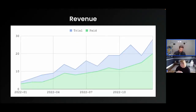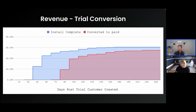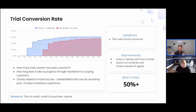Revenue is an interesting category because it tends to be trailing metrics, but they have a more direct correlation to the actual performance of your business. Trial conversion rate: being able to install easily and quickly isn't the only thing that converts trials, but if your install process is really painful, it's probably going to impact your trial conversion rate. You can see how after a certain number of days, how likely a customer is to have completed their install and how likely they are to have converted to paid. It is definitely impacted by your ease and speed of installation and customer experience.